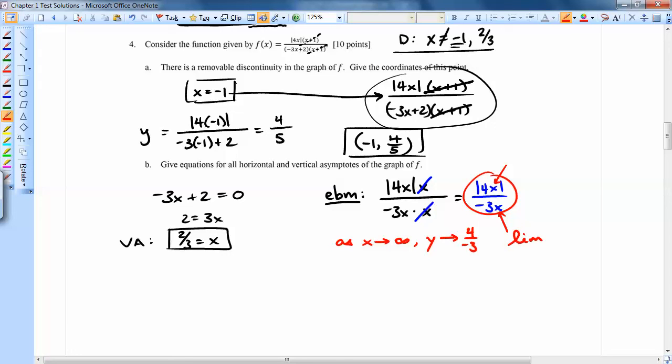Another way of writing that, limit as x goes to infinity of, we'll write, actually I can write f of x here, because it follows the same idea. That's going to be negative 4 thirds.